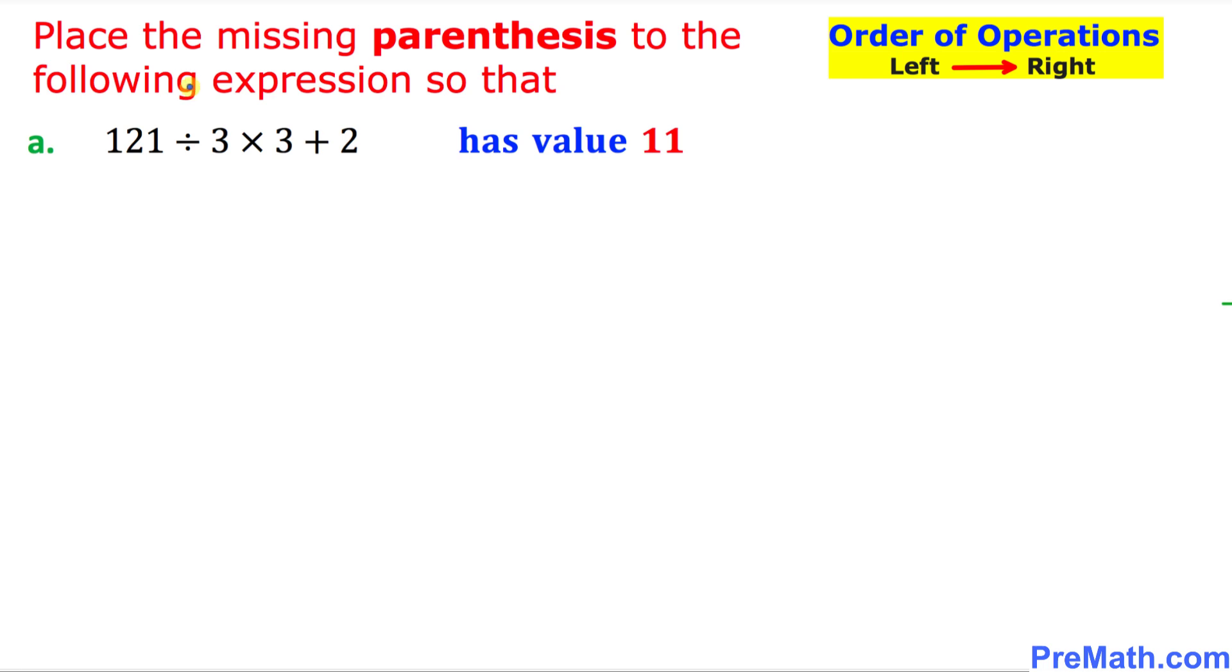It states place the missing parentheses or sometimes we call brackets to the following expression so that this given expression has a value of 11. Can you figure out a place where if we place or insert parentheses we are going to get a value of 11? You can take your time.